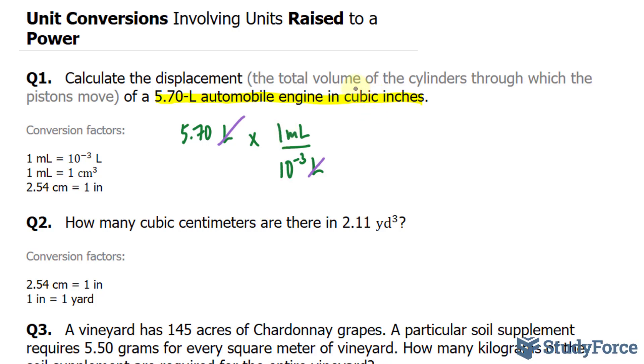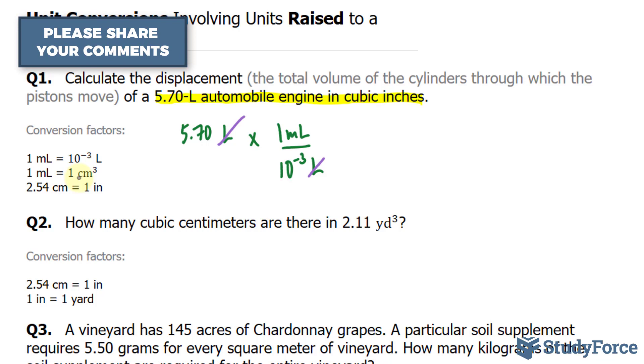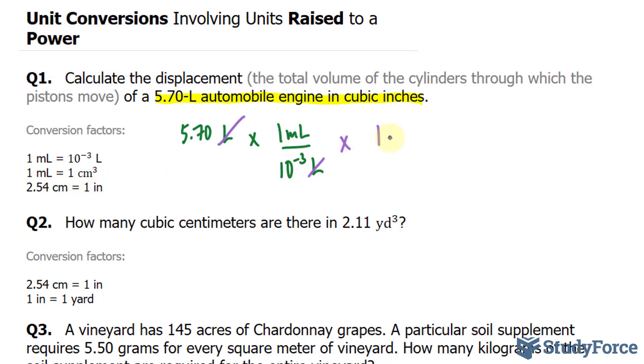Now remember my end goal is cubic inches. To get to cubic inches, I need to now convert this number into cubic centimeters. I'll multiply this by 1 centimeter cubed over 1 milliliter. Notice what I did here - I rewrote this as a fraction and I put centimeters cubed at the top and milliliters at the bottom. The reason why I did that is because now I can cancel out the milliliters. So far I'm left with centimeters cubed.